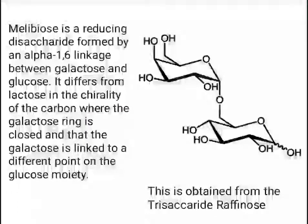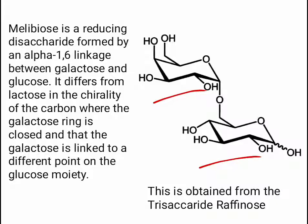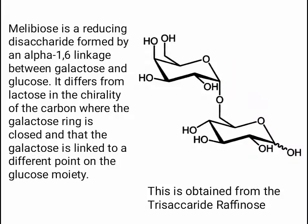Melibiose is a reducing disaccharide formed by an alpha 1,6-linkage between galactose and glucose. It differs from lactose in the chirality of the carbon where the galactose ring is closed and in that galactose is linked to a different point of the glucose moiety. Melibiose is obtained from the partial hydrolysis of the trisaccharide raffinose, containing one unit of galactose and one unit of glucose with a 1,6-linkage. The galactose ring contains the glycosidic linkage and the glucose unit contains the hemiacetal.